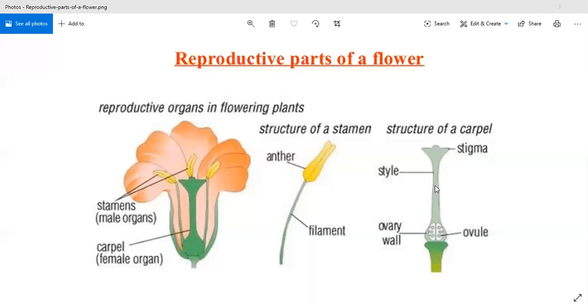It holds the stigma to receive pollen grains. It is through the style that the pollen tube grows and reaches the ovule.